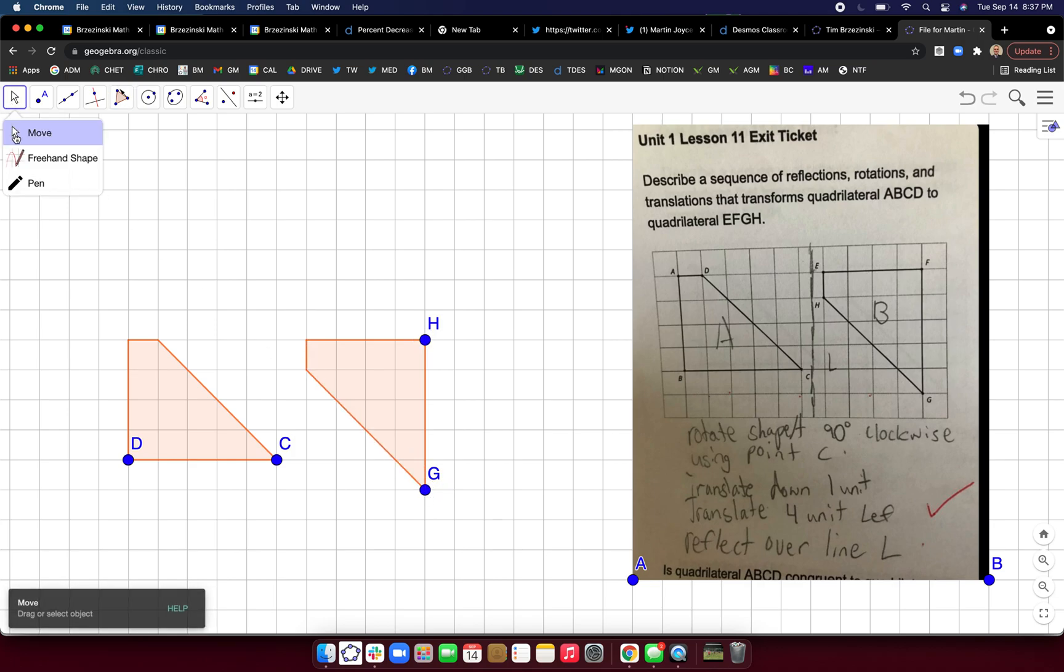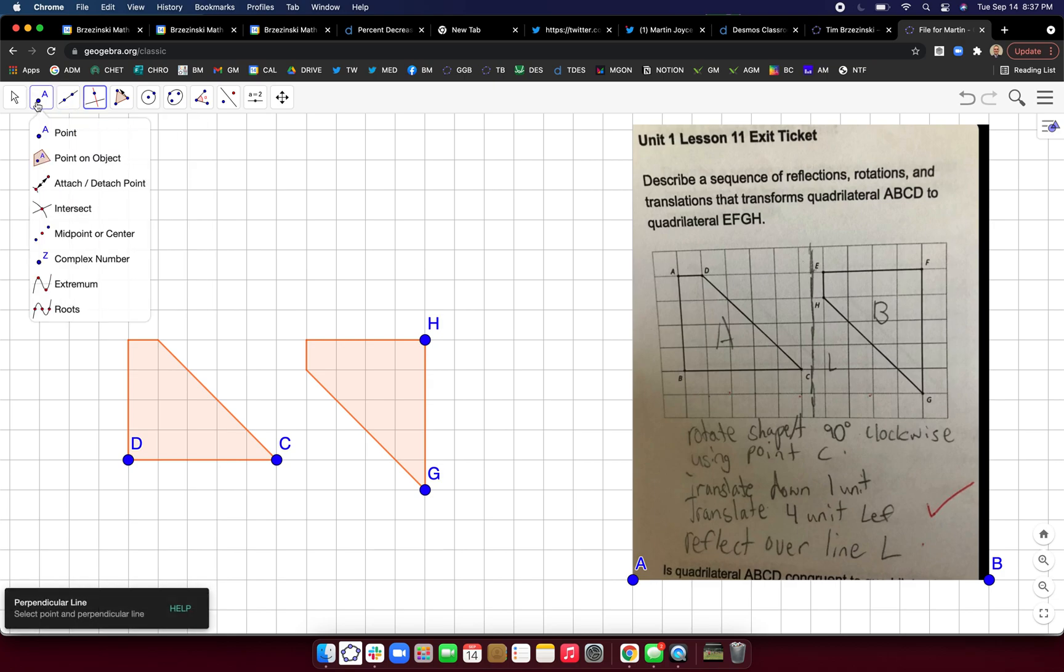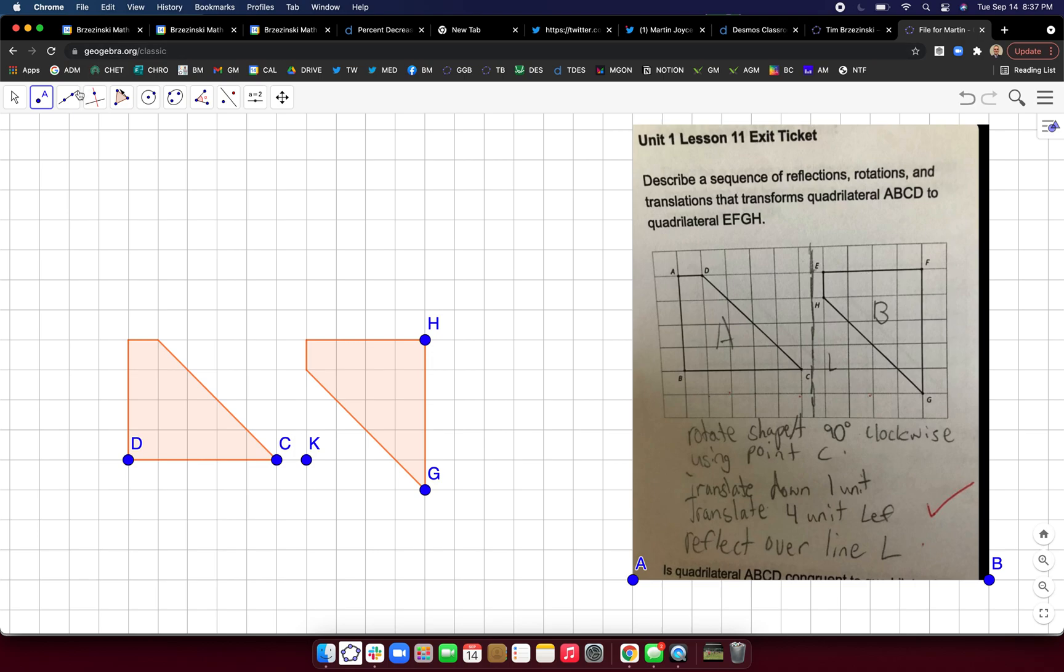Back to the move arrow. So these are the original positions of the figures, the pre-image and the image. So now let's make the perpendicular or parallel line there. First of all, let's put a point here. We'll put the midpoint.